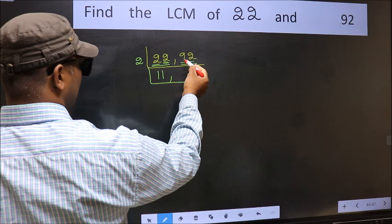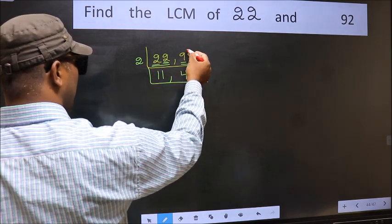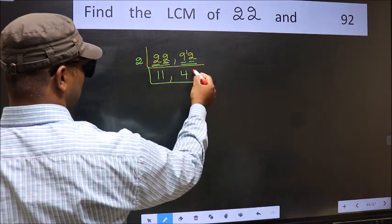First digit 9, a number close to 9 in the 2 table is 2 fours 8. 9 minus 8 is 1, 1 carried forward makes 12. When do we get 12 in the 2 table? 2 sixes 12.